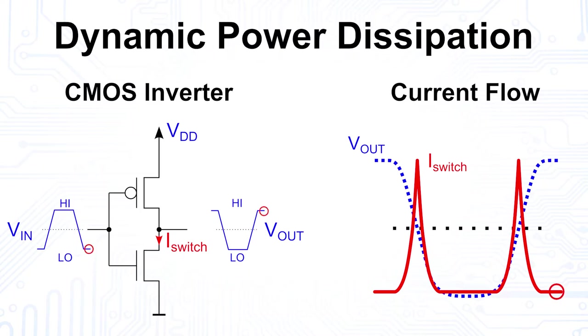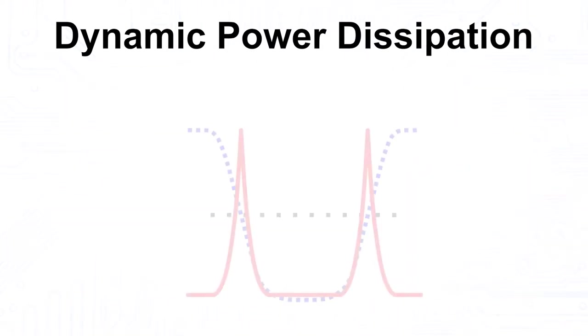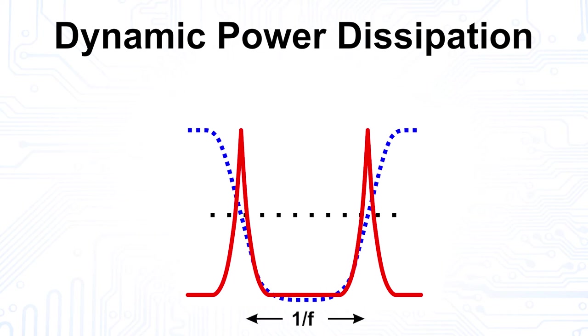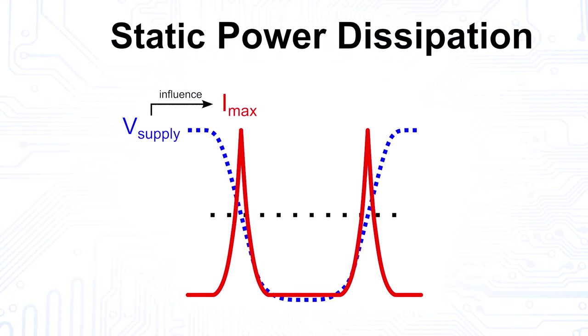Only during switching from high to low or from low to high, current is flowing for a very short time across both transistors. This is called the dynamic power dissipation of the CMOS circuit, and it is mainly dependent on the number of switching operations, in other words the switching frequency, and the supply voltage, as it determines the maximum current during the switching operation. The supply voltage is also a significant factor for the so-called static power dissipation, due to leakage current, which occurs because MOSFETs can never be switched off entirely.